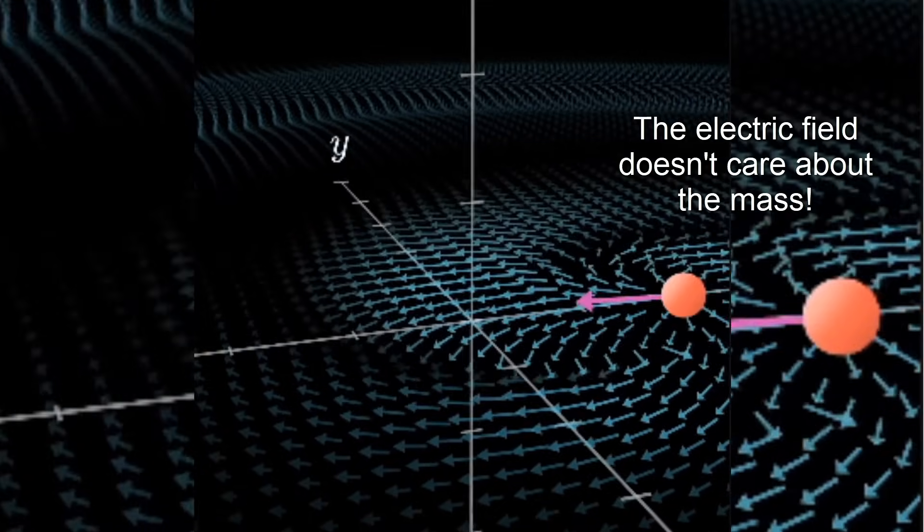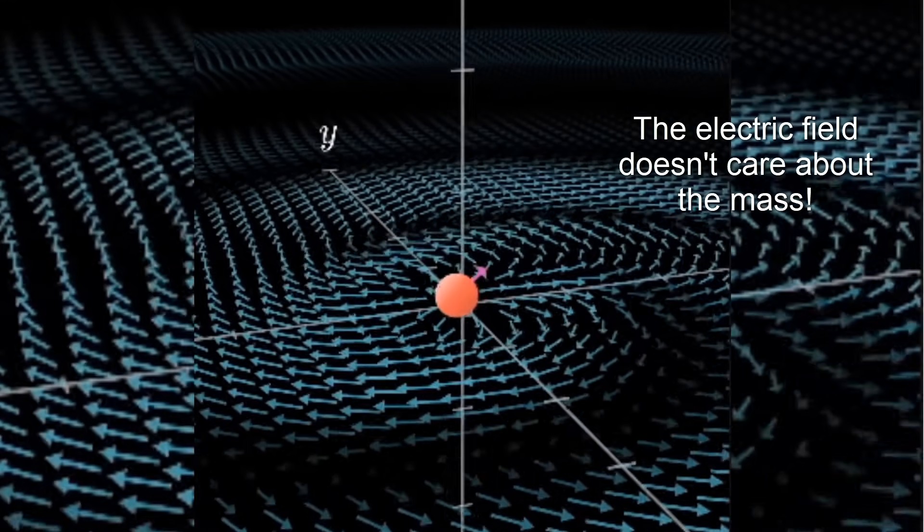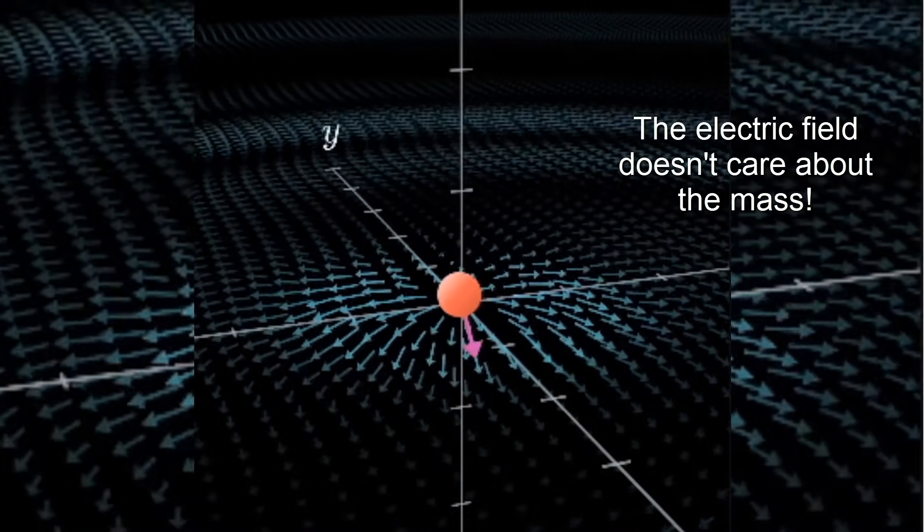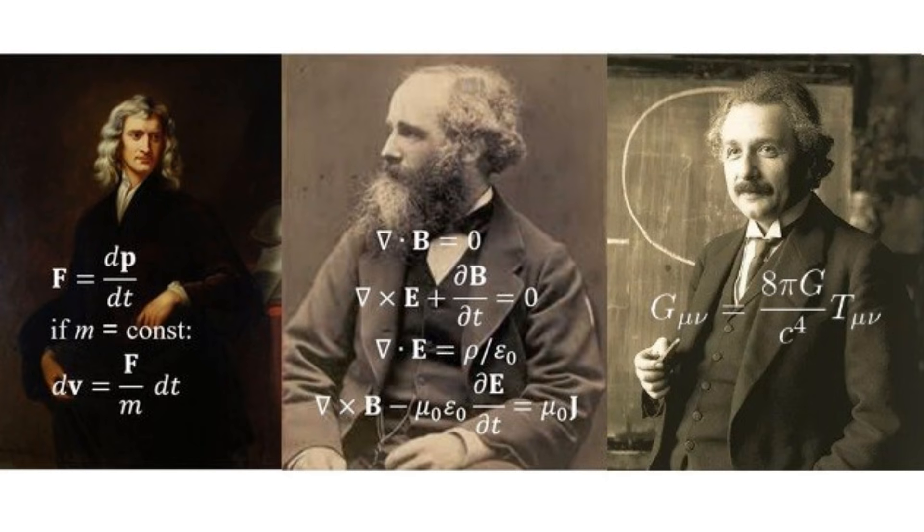While the electric field does not carry information about the particle's mass, another peculiarity is that gravity, described by general relativity, was the first fundamental relativistic theory that was inherently non-linear, in contrast to the previous classical electromagnetism of Maxwell in vacuum and Newtonian gravity.